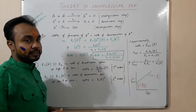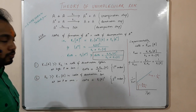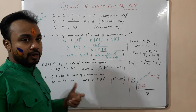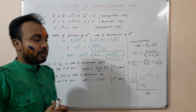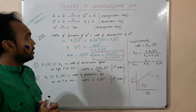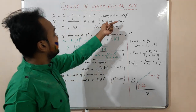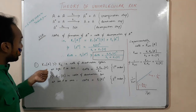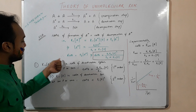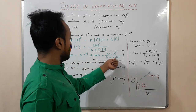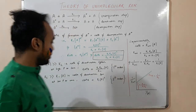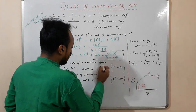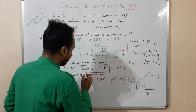Now there are two special cases: at high pressure and at low pressure. At high pressure or high concentration, the rate of deactivation is higher because the activated molecules undergo rapid collision with unactivated molecules to regenerate reactants. So K₋₁[A] is much greater than K₂, and we neglect K₂ in the denominator. This gives rate equal to (K₁K₂/K₋₁)[A], which follows first-order kinetics.